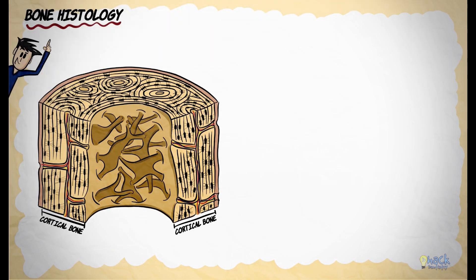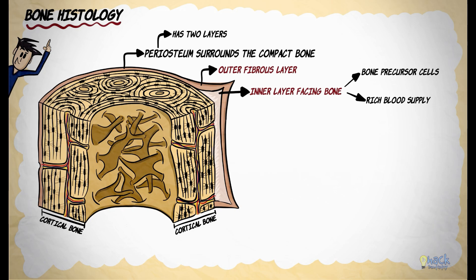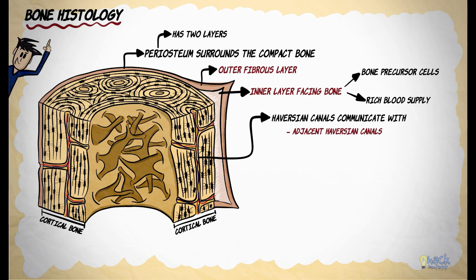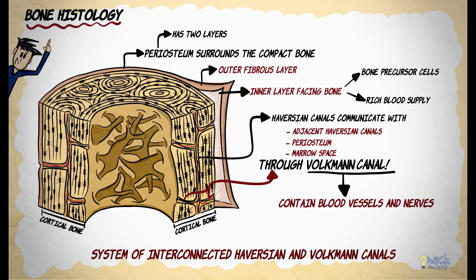The outermost layer of the compact bone is surrounded by a periosteum having two layers: an outer fibrous layer and an inner layer facing the bone, which contains precursor bone cells and a rich blood supply. The haversian canals communicate with each other as well as the periosteum and the marrow space via canals called Volkmann canals. Volkmann canals, like haversian canals, also contain blood vessels, and this system of interconnected haversian and Volkmann canals supplies nutrients, nourishes the bone and keeps it vital.